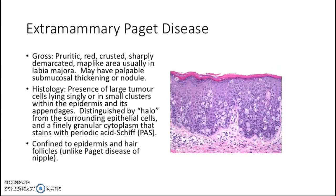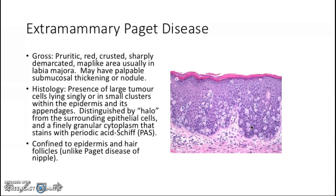Extramammary Paget disease presents as a pruritic, red, crusted, sharply demarcated map-like area in the labia majora. It can be mistaken for eczema at first and may have a palpable submucosal thickening or nodule. Histologically, it will present with large tumor cells in single distributions or in small clusters within the epidermis and its appendages. These cells are surrounded by a halo and will be positive for PAS stain. These malignant cells are confined to the epidermis and hair follicles, unlike Paget disease of the nipple.